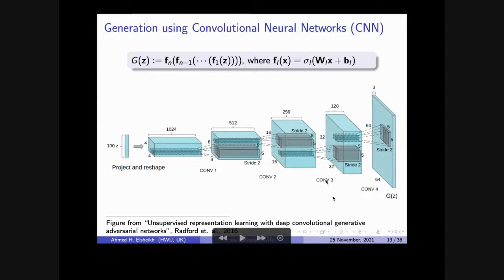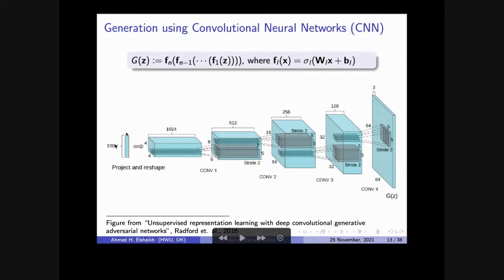The question is how do we find these big weights which control the transformation from random noise to a geologically plausible image. This is a very hard problem and we don't solve it in a supervised way. We don't have a specific noise vector paired with a specific image to use back-propagation to learn that.